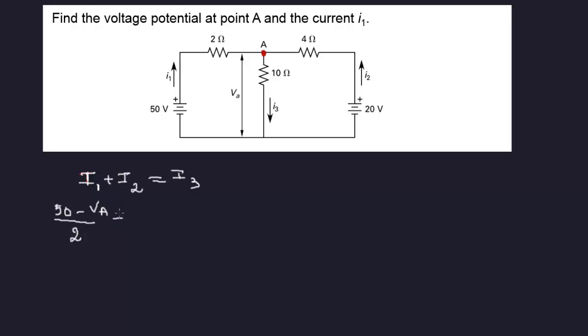Plus what's I2? I2 is this voltage over here. Potential here. So we have from 20 to VA. So we have 20 minus VA over 4. Equals I3. What's I3? It's going down from VA to 0. So VA over 10.